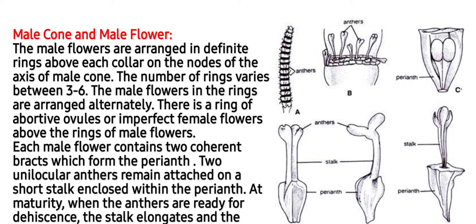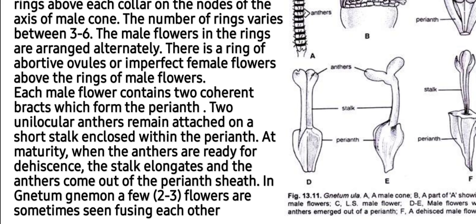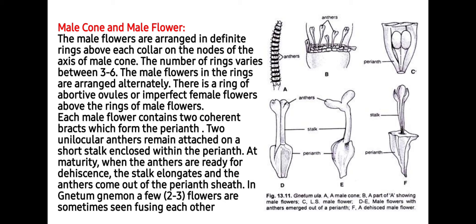The male flowers in the ring are arranged alternately. There is a ring of abortive ovules or imperfect female flowers above the ring of the male flowers, as you can see in this image. Each male flower contains two coherent bracts which form the perianth. Two unilocular anthers remain attached on a short stalk and are closed within the perianth. At maturity, when the anthers are ready for dehiscence, the stalk elongates and the anther comes out of the perianth sheath.